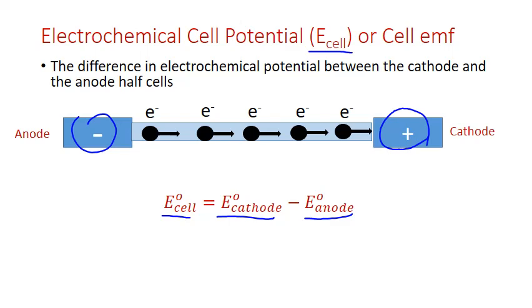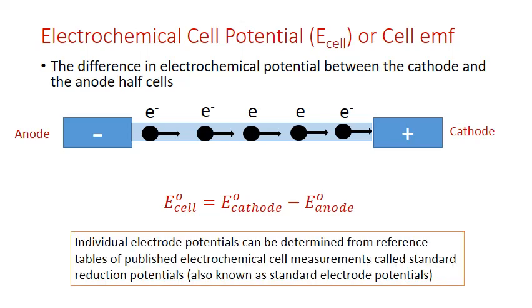For any combination of cathode and anode half reactions, we can predict the electrochemical cell potential using tables of reference values known as standard reduction potentials or standard electrode potentials. These are published results of a wide variety of electrochemical cell potential experiments measured under standard thermodynamic conditions. The degree sign on E cell, E cathode, and E anode simply indicates these standard conditions.